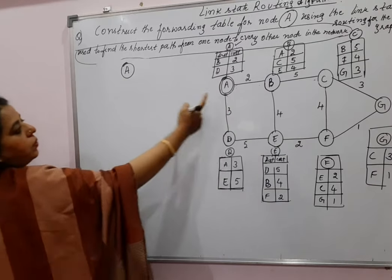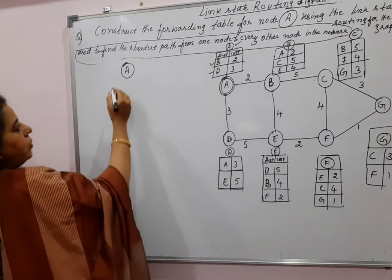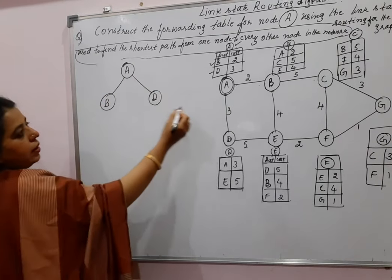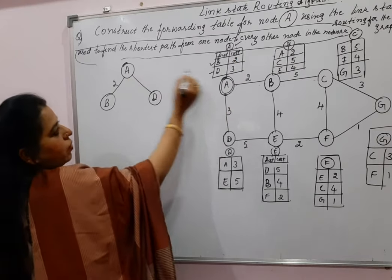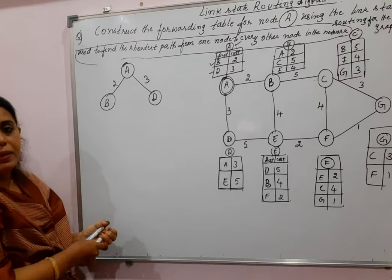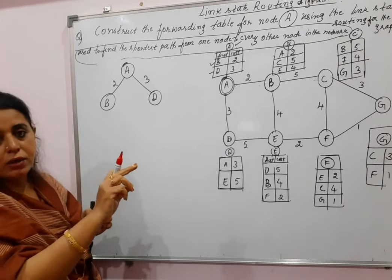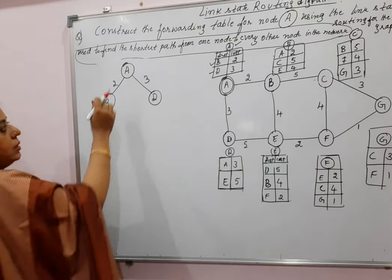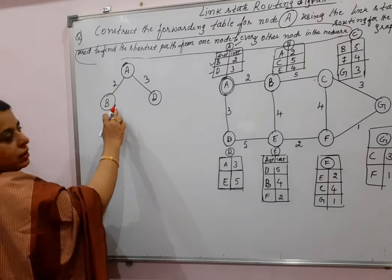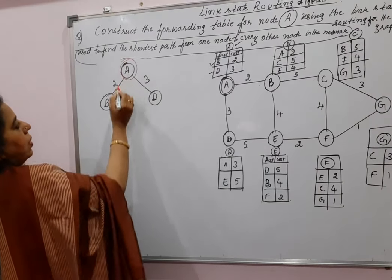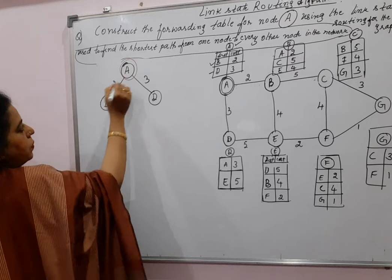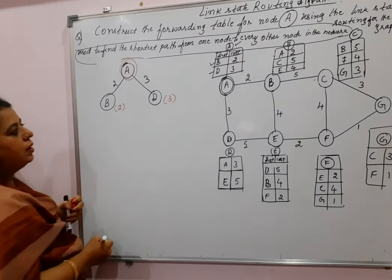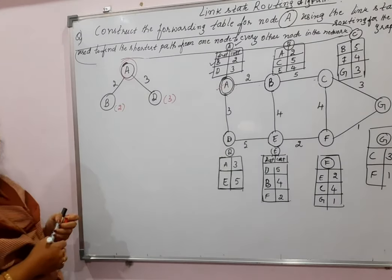The root node is A. A is connected to B and D, so you add these neighboring nodes to the tree. The cost written on the link is the cost, and the value beside the node is the distance. Since there is only one link, the cost equals the distance here. The distance from A to B is 2 (written in brackets in red). The distance from A to D is 3. Node A is now visited.